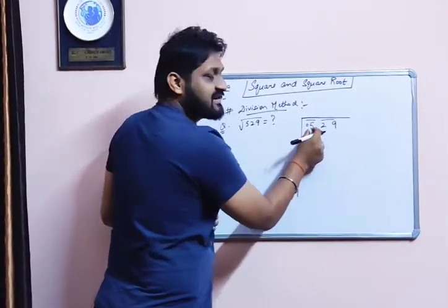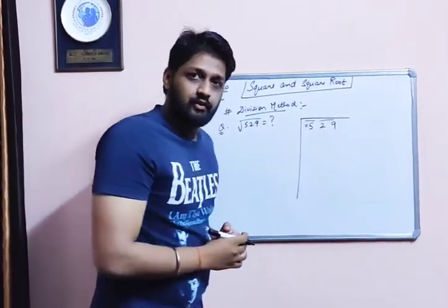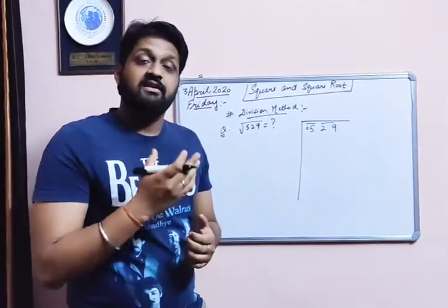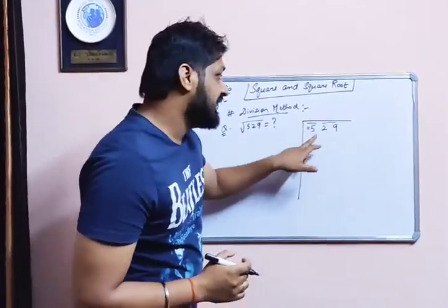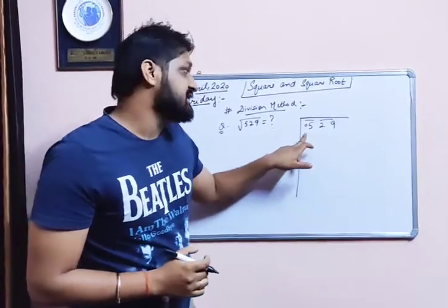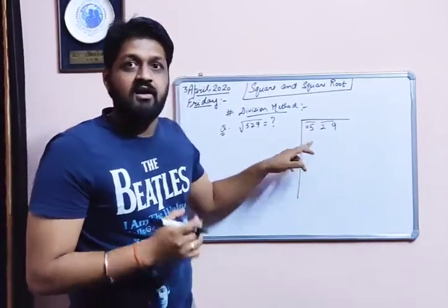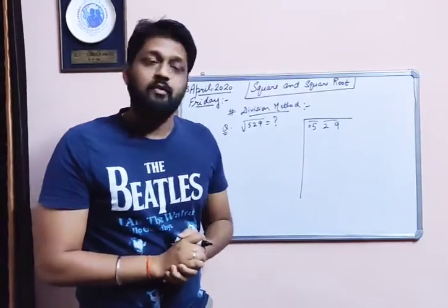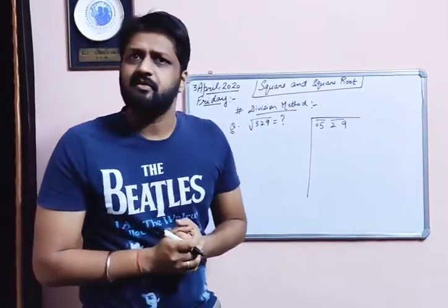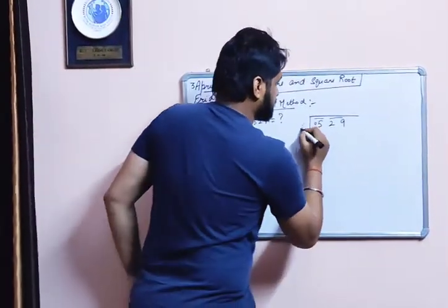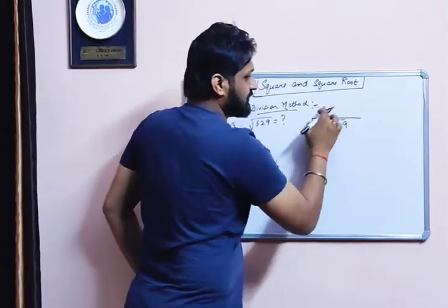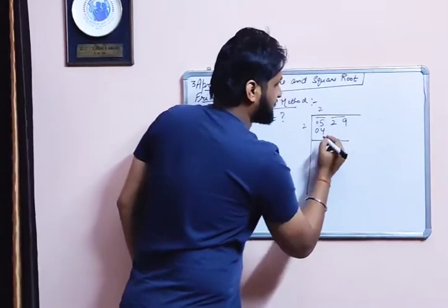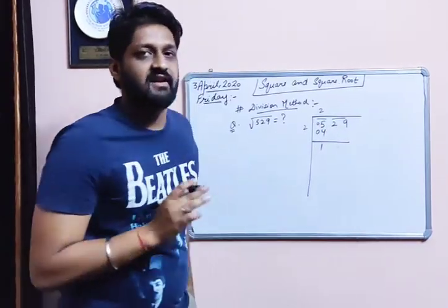Now the first pair is 05 and the second pair is 29. Next step is we have to think of a number whose square is less than or equal to 05. Any number whose square is less than or equal to 5 — the number is 2. So 2 multiplied by 2, 2 squared is 4. Now 5 minus 4 is 1, so this is the remainder.